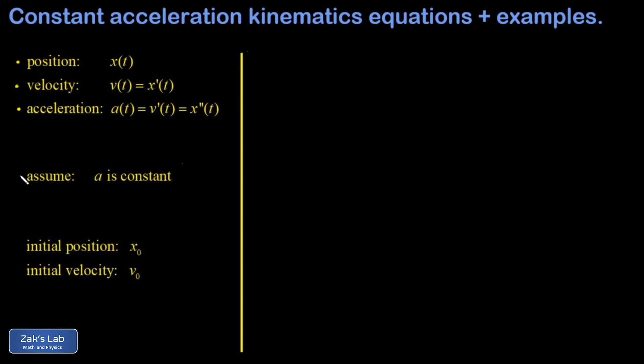Next, we make a critical assumption. We want to look just at the case where the acceleration is a constant. So everything we derive from this point forward counts only for that case where the acceleration is constant.